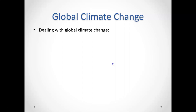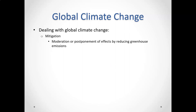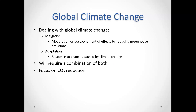So we know what the problem is — what do we do? There are two approaches. The first is mitigation: moderating or postponing the effects by reducing our greenhouse emissions, because in order to tackle this problem we have to stop producing so much greenhouse gas. The other approach is adaptation — acknowledging there's not much we can do about some consequences right now, but at the very least we can respond to these changes. In reality, the future will have to hold both: we'll have to adapt to things that are too late to change, but also do whatever we can to mitigate further consequences.